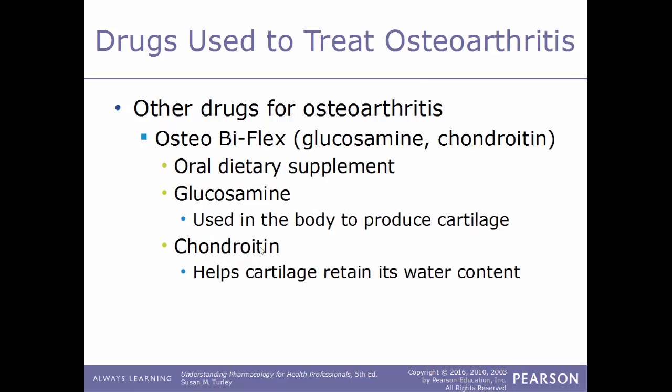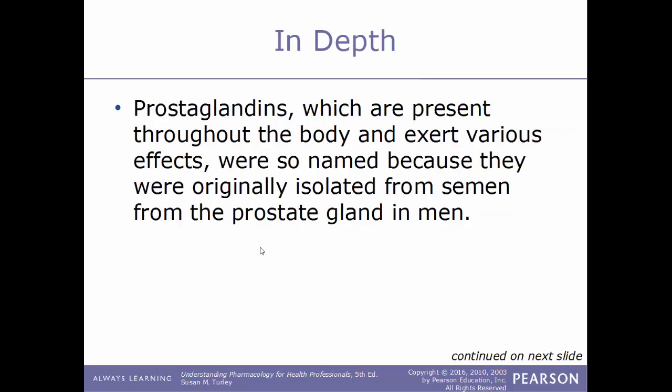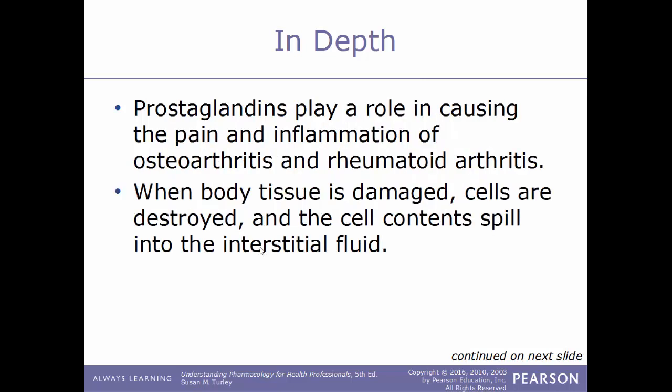Another drug used to treat osteoarthritis is Osteo Bi-Flex, an oral dietary supplement combining glucosamine and chondroitin. Glucosamine is used in the body to produce cartilage, and chondroitin helps cartilage retain its water content. Now, a bit more about prostaglandins: prostaglandins are present throughout the body and exert various effects; they were originally isolated from semen and the prostate gland in men, and they play a role in causing the pain and inflammation of both osteoarthritis and rheumatoid arthritis.